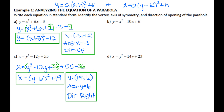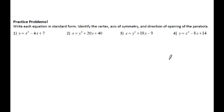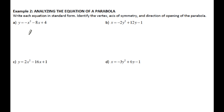Sometimes the equations won't have nice coefficients — there will be a number in front of your X-squared or Y-squared. We're still going to do the same thing, it's just a little different in the process. Before I insert my blanks, I need to factor out the number in front of the X-squared from only those first two terms — just the number, not from all three terms. So I'm taking out a negative 1, leaving me with X squared plus 8X, and then I can insert my blank.